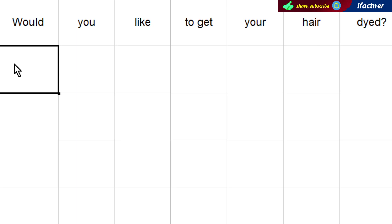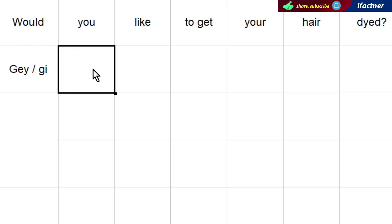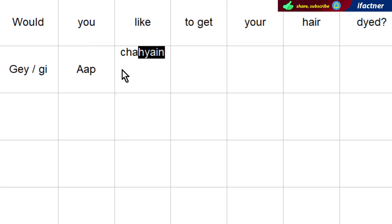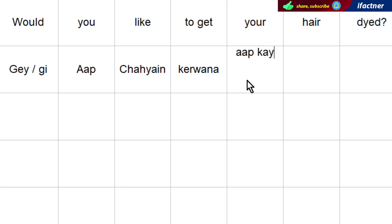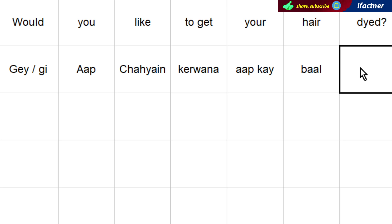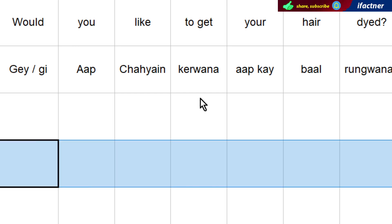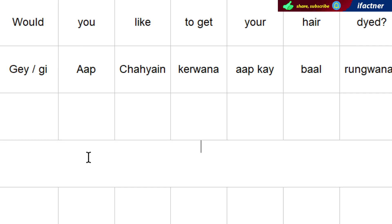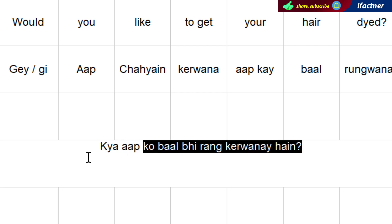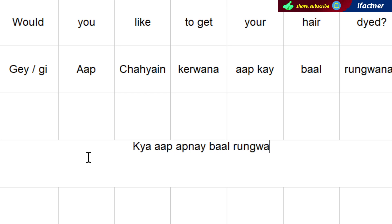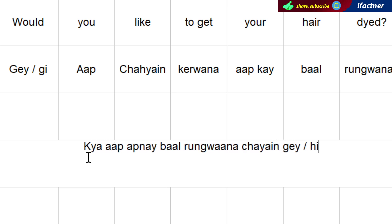'Would' can be translated as 'chaahingay' — 'gay' for male or 'ghee' for female. 'You' is 'aap', 'to get' is 'kerwaana', 'your' is 'aap ke', 'hair' is 'baal', 'dyed' is 'rangwaana'. So we translate 'Would you like to get your hair dyed?' as: 'Kya aap apne baal rangwaana chaahingay' for male, or 'chaahengi' for female.